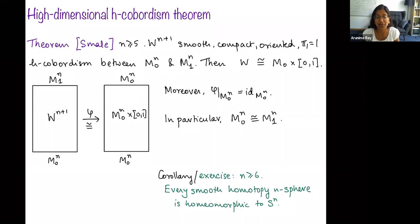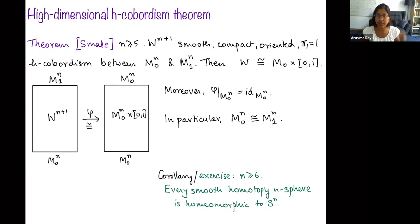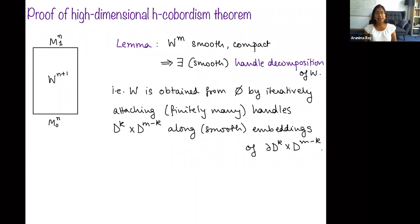One reason you might care about this high-dimensional h-cobordism theorem is that it gives a straightforward corollary: smooth homotopy n-spheres for n ≥ 6 are homeomorphic to Sⁿ. Smale received the Fields Medal, and this was his main result. The idea is that given a homotopy n-sphere, you remove some parts to get an h-cobordism, and then apply the h-cobordism theorem. It is a nice exercise to think about why you get homeomorphism rather than diffeomorphism in the output.